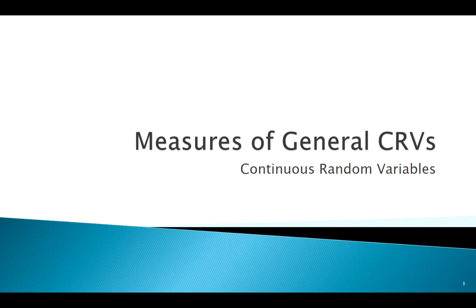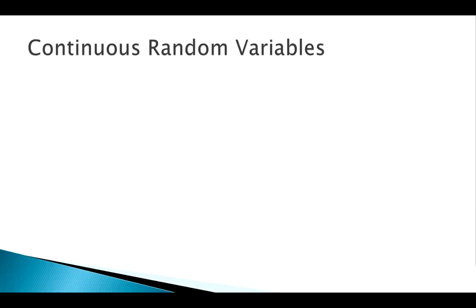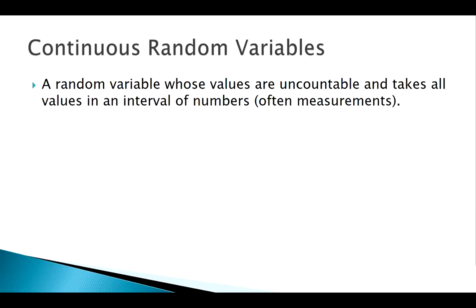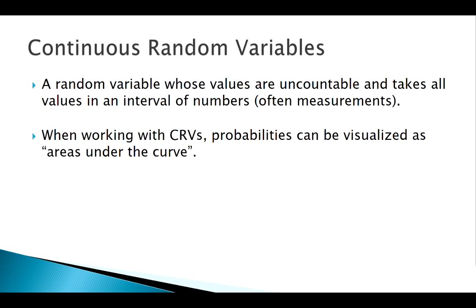Welcome back. In this section we're going to talk about general continuous random variables and how we treat those. With continuous random variables we have to get pretty mathematical, because a continuous random variable has an uncountable amount of potential values — usually things that we measure. We're interested in the area on an interval, and we represent continuous random variables with PDFs, probability density functions. We can visualize probabilities as areas under that curve.